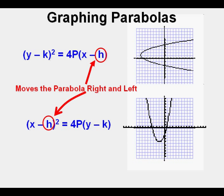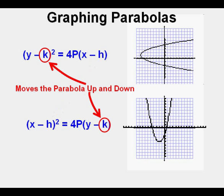And also as in the other forms of the conics, the k moves the center or vertex of the parabola up and down. Y minus a number moves the parabola upward and y plus a number moves the parabola downward.